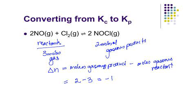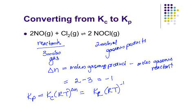So if we look at our equation where KP equals KC times RT raised to delta N, that means KP equals KC times RT to the negative 1.